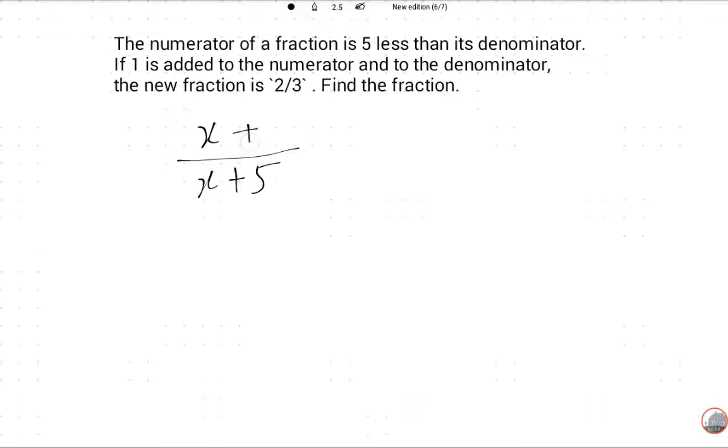If 1 is added to the numerator and the denominator, the new fraction is 2/3. So we will solve this: (x+1) upon (x+6) is equal to 2 upon 3.